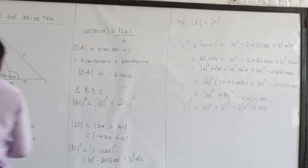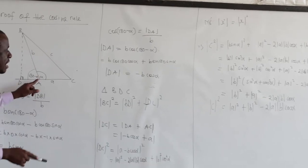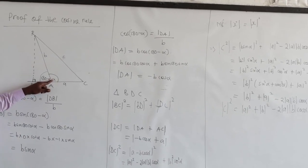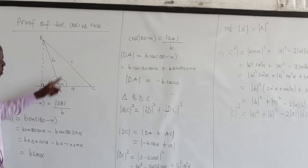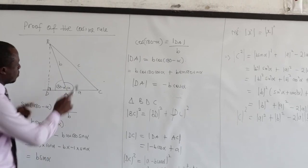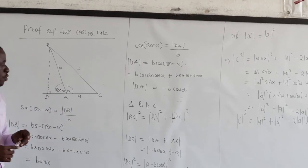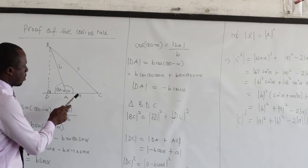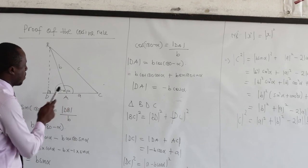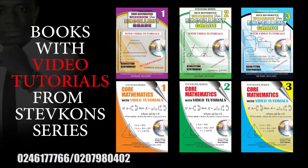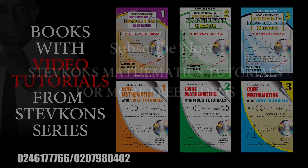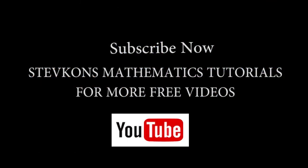All that we know is that the angle is alpha, and the side facing that angle is c. So we see that c² equals a² plus b² minus 2ab·cos(alpha), where alpha is the included angle. And this is the proof of the cosine rule.